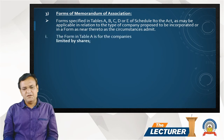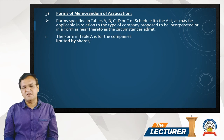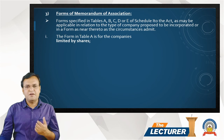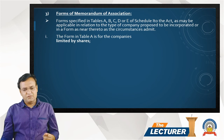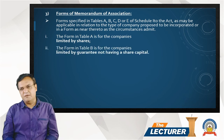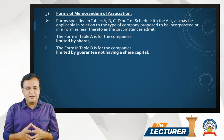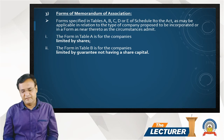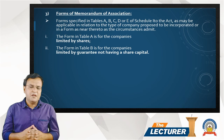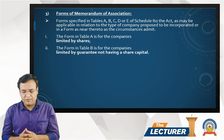The form in Table A is for companies limited by shares — these companies obviously have share capital, so Table A applies. The form in Table B is applicable when the type of company is a company limited by guarantee but not having share capital. A company limited by guarantee may or may not have share capital; if it does not have share capital, the memorandum format will be Table B.